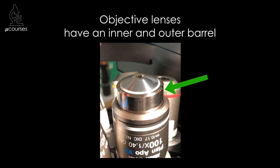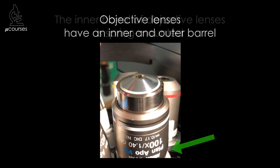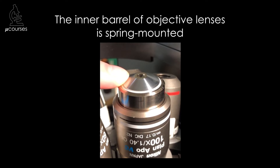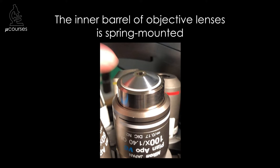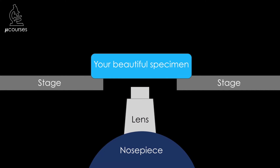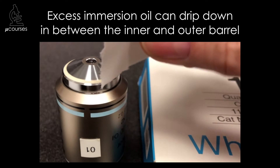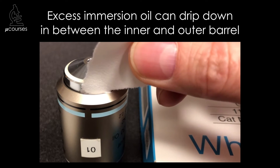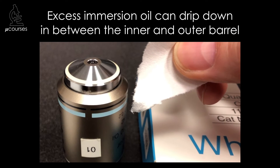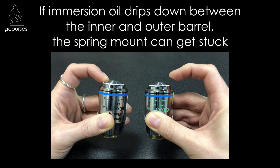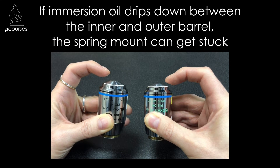Most objective lenses have an inner barrel and an outer barrel. The inner barrel is spring mounted so that if pressure is placed on it, it retracts into the outer barrel. This is a safety mechanism so that if, when you're focusing the objective lens, you miss the focal plane and continue to move the objective towards your sample, the lens has some space to retract before you break the sample. When too much immersion oil is used, it can drip down the side of the objective and get in between the inner and outer barrel, and since immersion oil dries over time it can get very sticky, so instead of retracting when pressure is placed on it, it will become stuck.